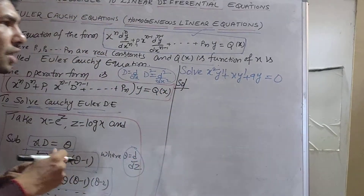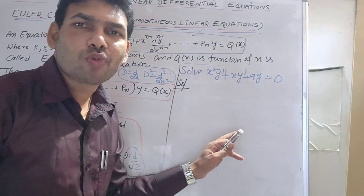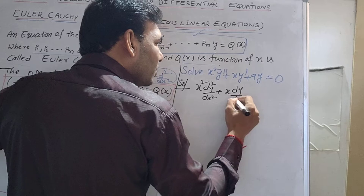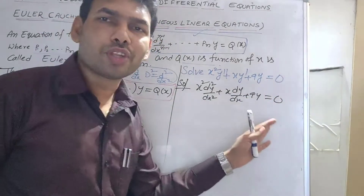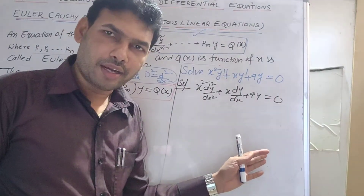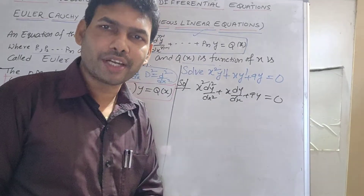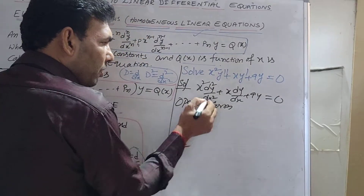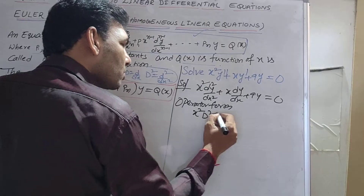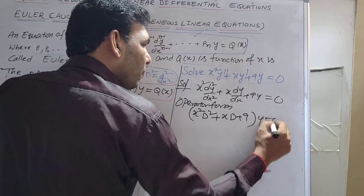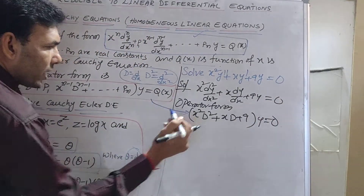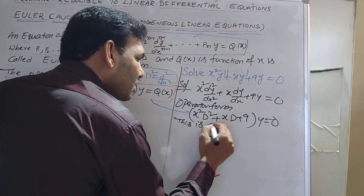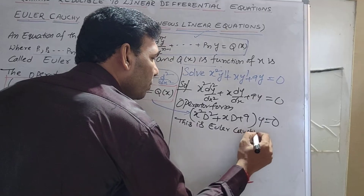If you observe here, x²y'' means x² * d²y/dx², so the equation becomes x² * d²y/dx² + x * dy/dx + 9y = 0, with RHS equal to 0. Comparing with the operator form of the Cauchy-Euler equation, you can easily identify this as a Cauchy-Euler differential equation. Once identified, immediately apply the said transformations and assumptions.